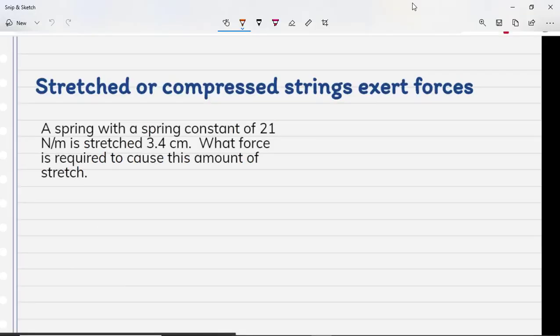A string with a spring constant of 21 newton per meter is stretched to 3.4 centimeters. What is the force required to cause this amount of stretch? Well, let's see what we can come up with here. Let's look at our formula for Hooke's law, which is what we looked at previously. And that is that the force is equal to the spring constant times the change in length. The only different thing we need to focus really on here, because this is a pretty straightforward problem, is that this needs to be in meters.